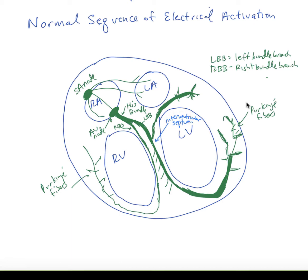Now the left bundle branch also has two divisions. As the depolarization spreads down along the interventricular septum, the action potentials go from the left bundle branch and spread in the rightward direction.